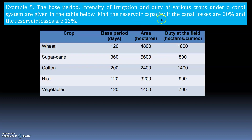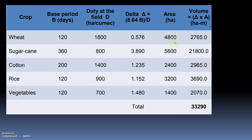To find the volume: volume is nothing but area multiplied by delta. Area is given and duty is given, but delta is not given. However, since we have the base period and duty, we can calculate delta. Let us set up this table.